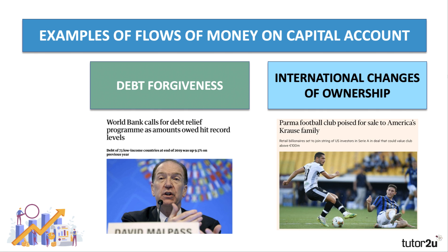Another good example of something that might appear on the capital account would be a change of ownership. Here's an example: Palmer Football Club was poised for sale to the American Krauss family. That would be a good example of a capital account flow.